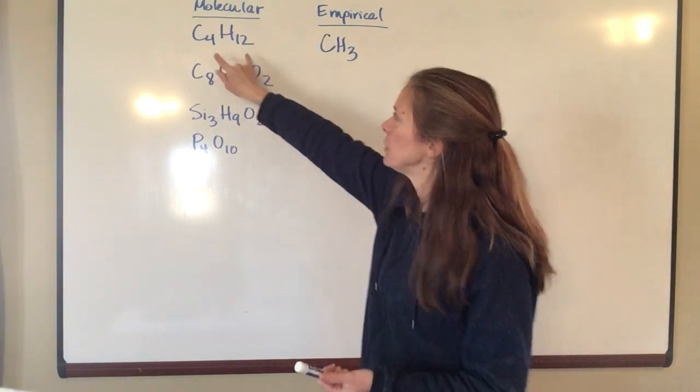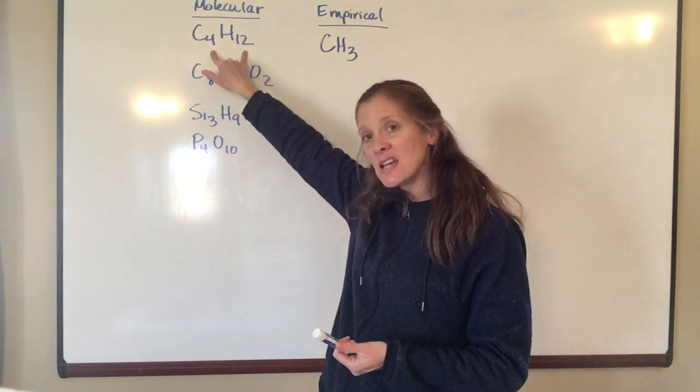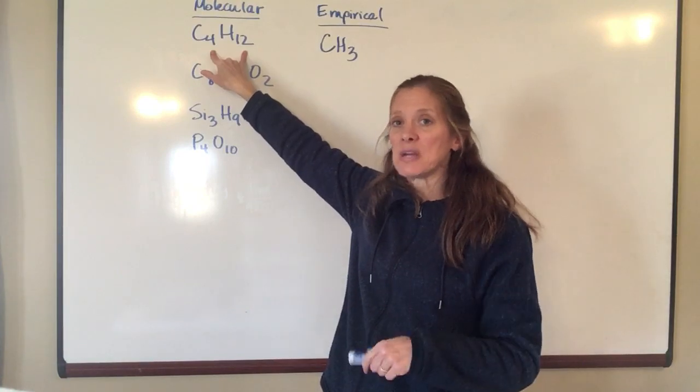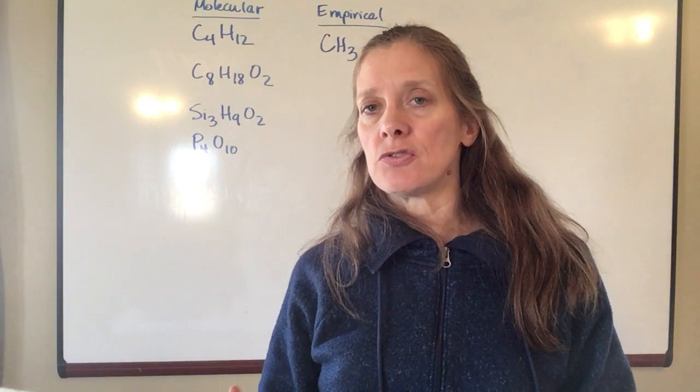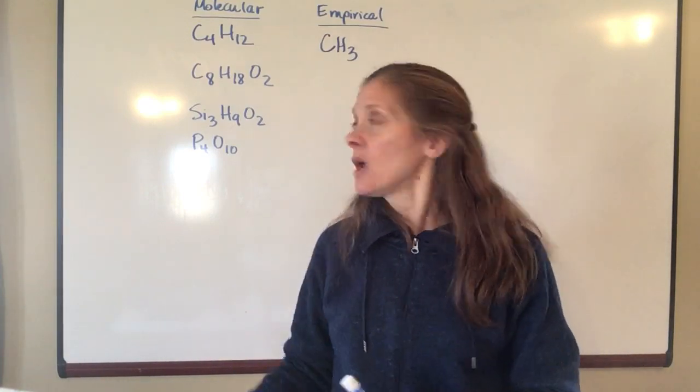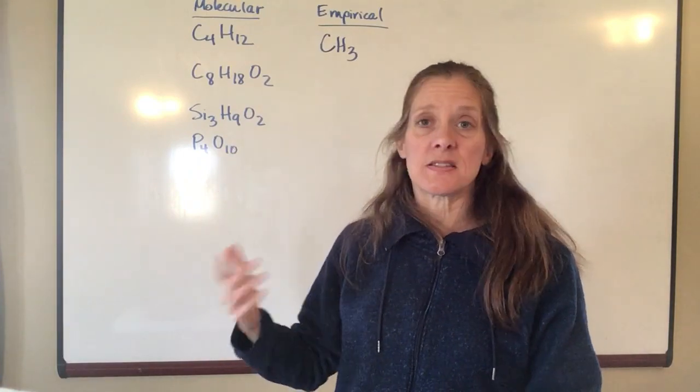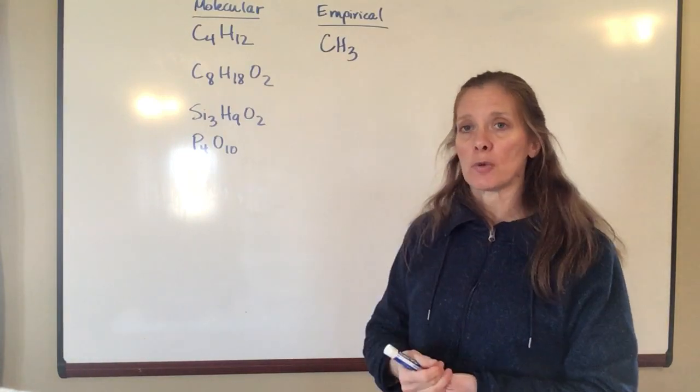Now if you divided both of those by 2 instead and you got C2H6, you should have looked at that and said, oh well I can take that down again. Just kind of like if you are reducing fractions and you don't pick the biggest number the first time through, sometimes you have to reduce it twice. Well it's the same thing here. If you end up having to reduce it twice, it's not a big deal as long as by the time you get finished you've got the simplest ratio possible.